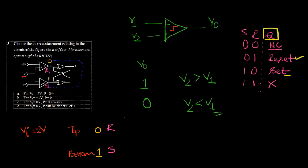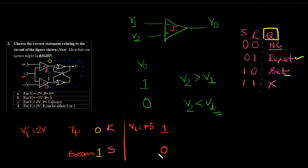For VI equals plus 3 volts: plus 3 is greater than plus 2, hence the top comparator gives 1. Is minus 1 greater than plus 3? No. Hence the bottom comparator gives 0. So R is at 1 and S is at 0 — hence output resets, that is Q becomes 0. Hence the answer is P equals 0.